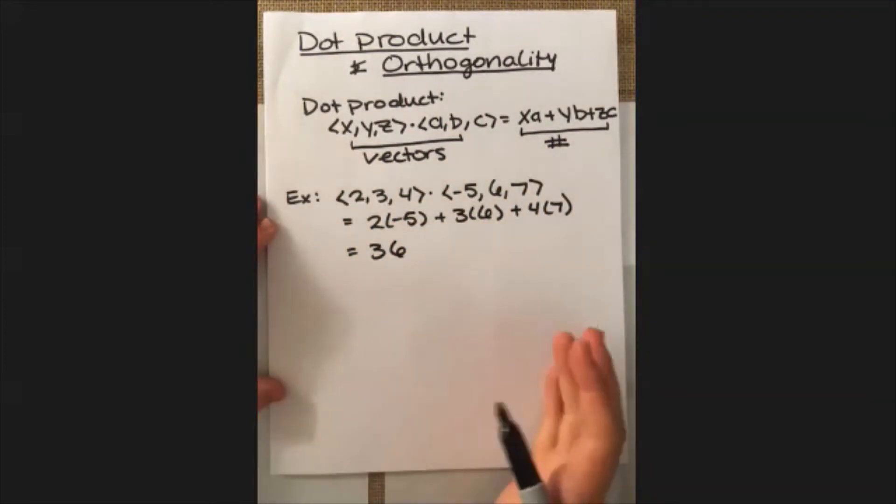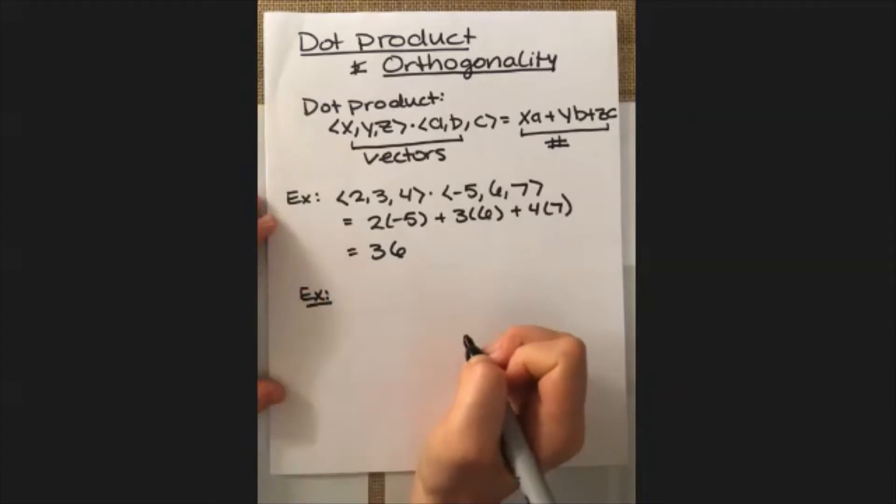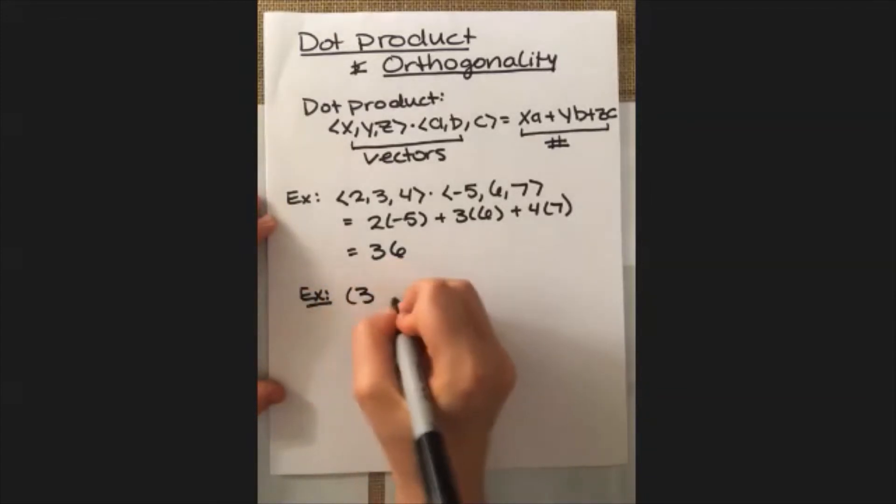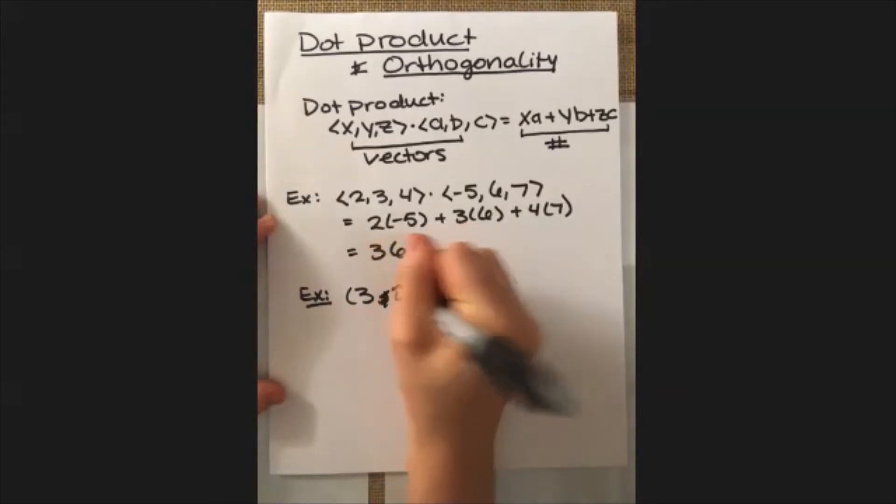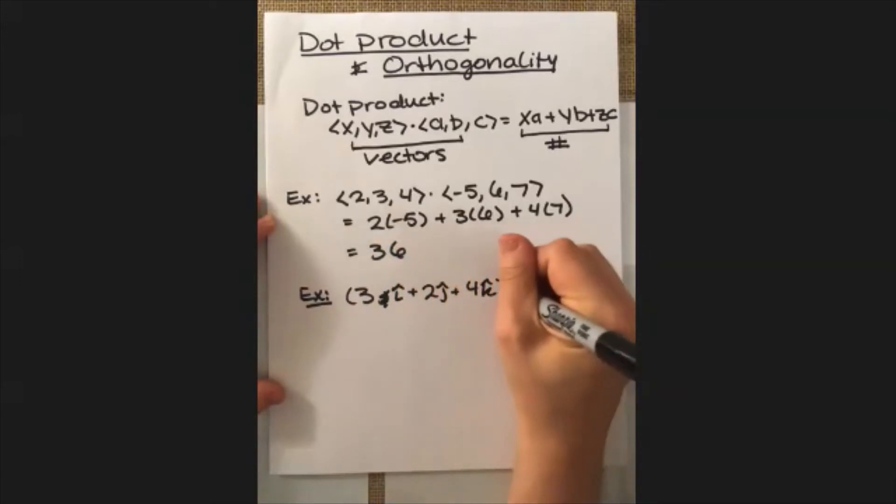Or if we want to look at an example that has maybe slightly different notation, we can look at say the vector 3i plus 2j plus 4k dotted with i plus 5j plus, or excuse me, minus 6k.